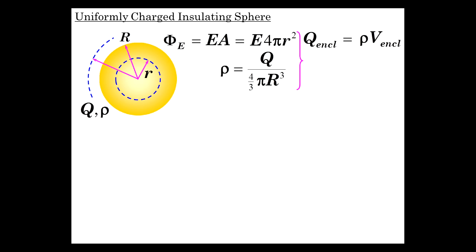Q enclosed is rho V enclosed. Rho is Q over V, so Q over V times V enclosed. So there it is, Q times V enclosed over V, which is Q little r cubed over big R cubed. We've encountered that relationship before. Everything else divides out.